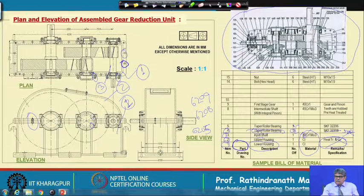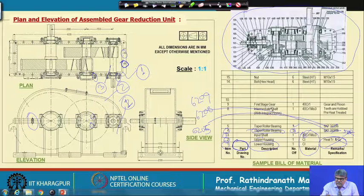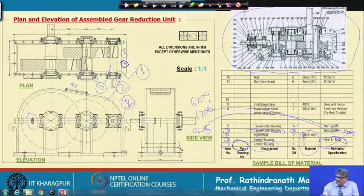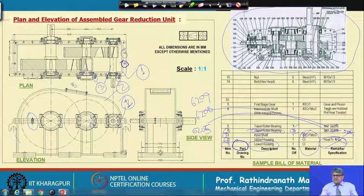That can be given — then the intermediate shaft, which is item number 8. The material is also mentioned. Gear and pinion teeth notes are written here for the intermediate shaft. Not necessarily all notes will be in the details, but this shows how to write any special remarks in the BOM. That is for the manufacturing items.